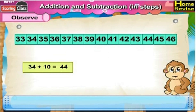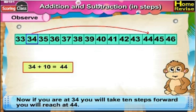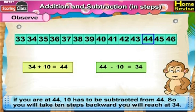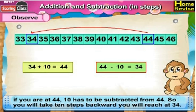34 plus 10 is 44. If you are at 34, you will take 10 steps forward and you will reach 44. So 34 plus 10 is 44. Now, 44 minus 10: if you are at 44, 10 has to be subtracted, so you will take 10 steps backward and you reach 34. So 44 minus 10 is 34.